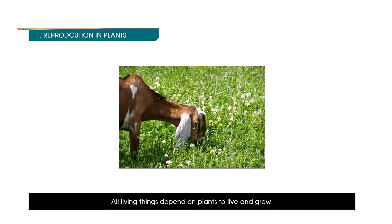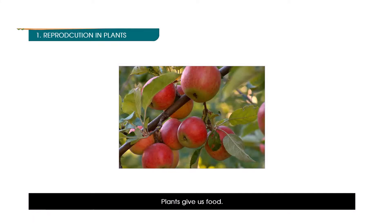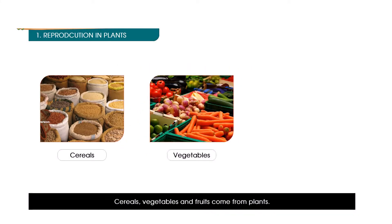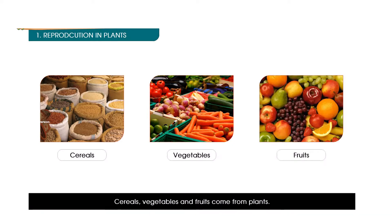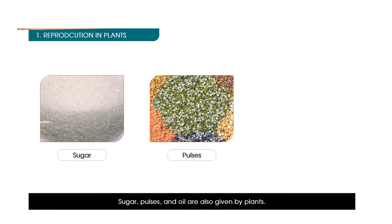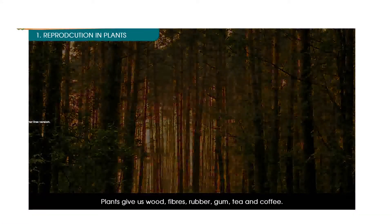All living things depend on plants to live and grow. We get many things from plants. Plants give us food — cereals, vegetables and fruits come from plants. Sugar, pulses and oil are also given by plants.